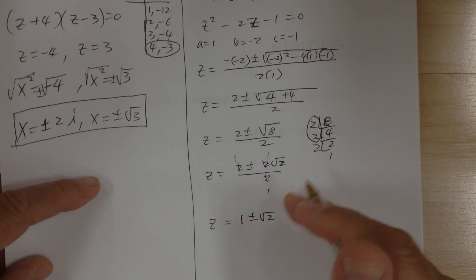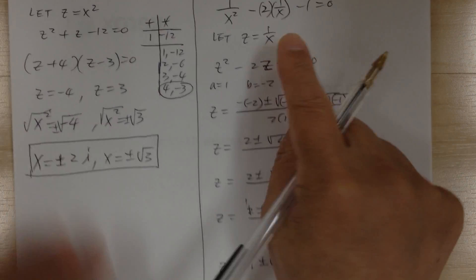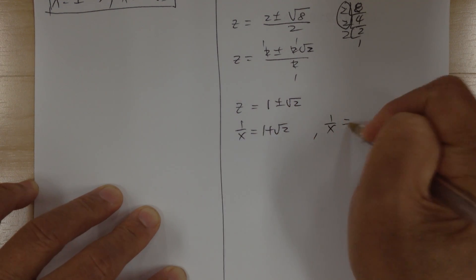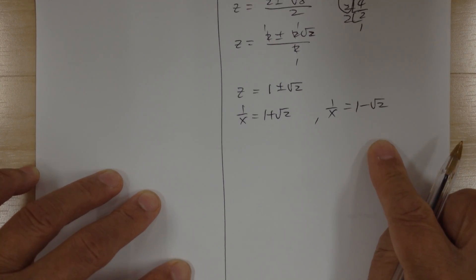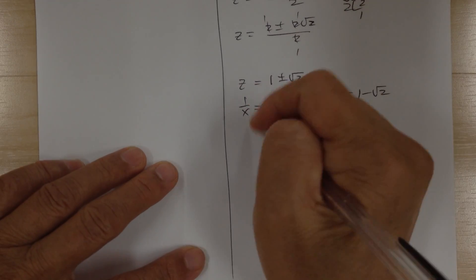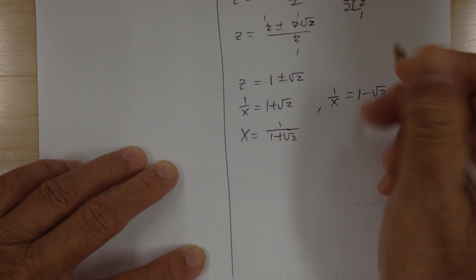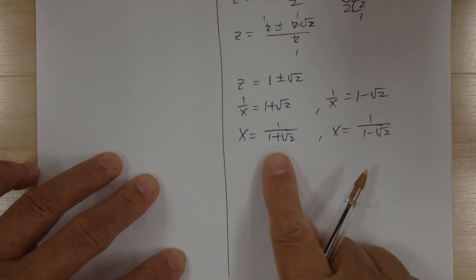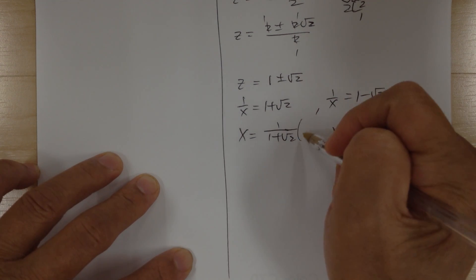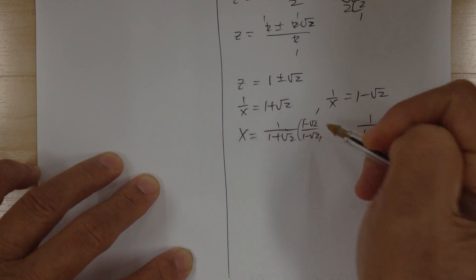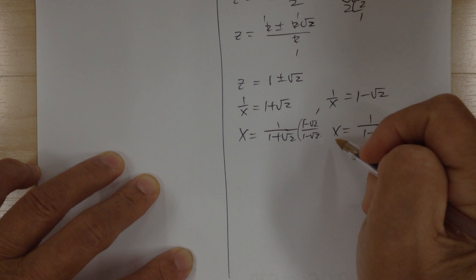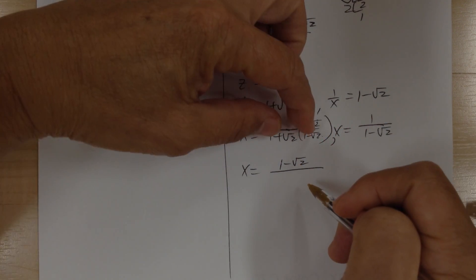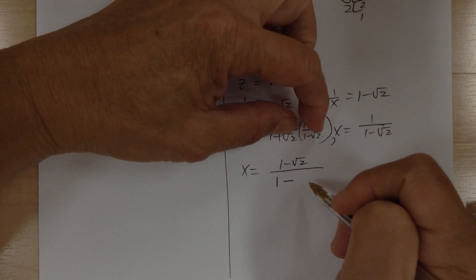Since z = 1/x, substitute back and separate: 1/x = 1 + √2 and 1/x = 1 − √2. Flip both sides upside down: x = 1/(1 + √2) and x = 1/(1 − √2). To simplify, multiply by the conjugate. For the first: multiply by (1 − √2)/(1 − √2); the denominator becomes 1 − 2 = −1, giving x = −1 + √2.